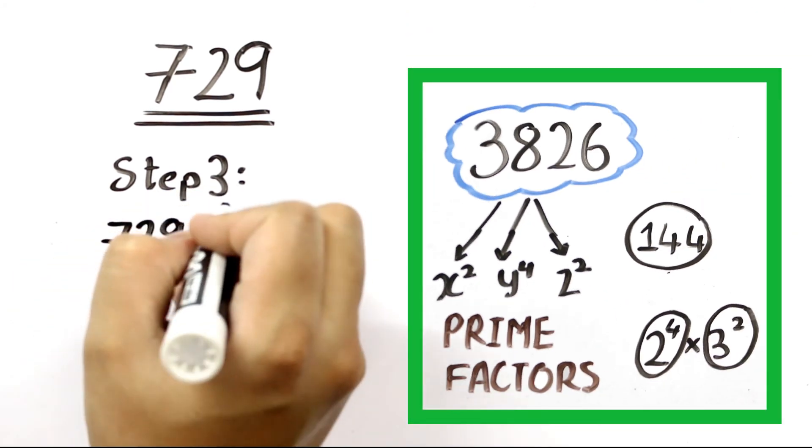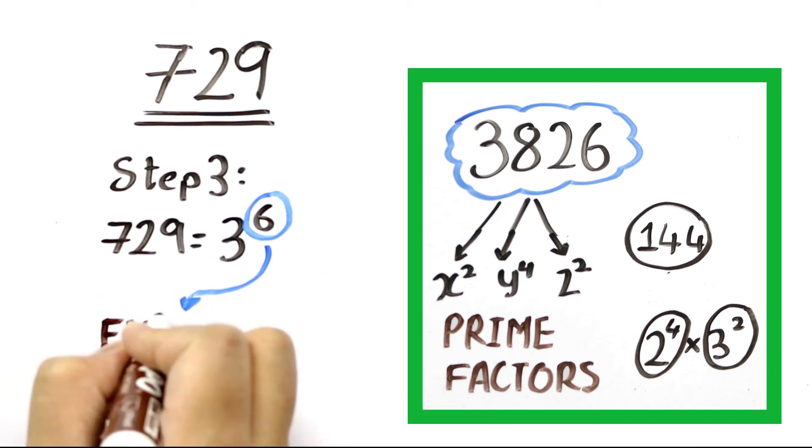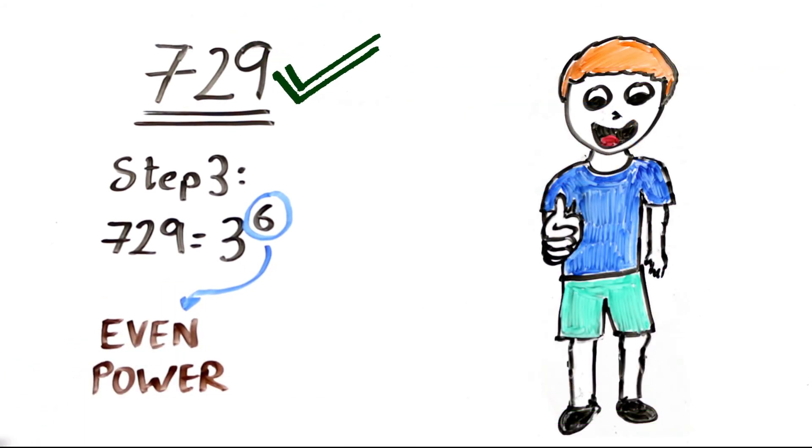When you find the prime factors of 729, you see that it is equal to 3 raised to 6. Here we can form 3 pairs of 3 squares, so it's confirmed that this is a perfect square.